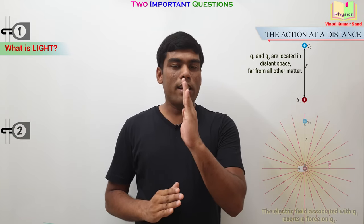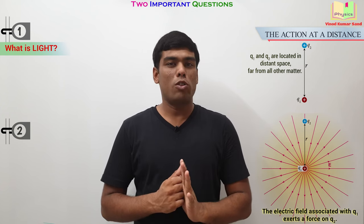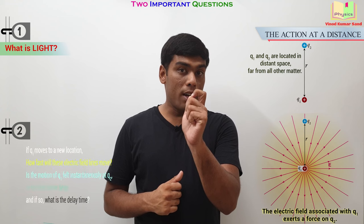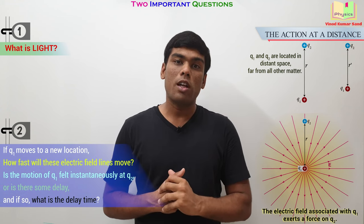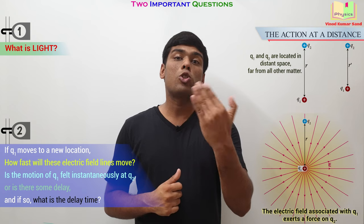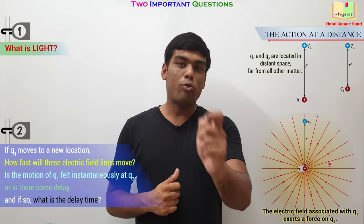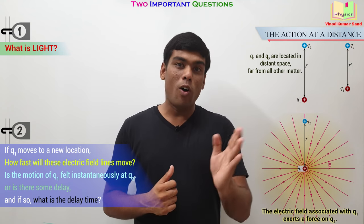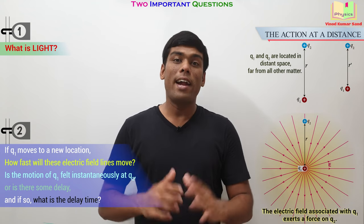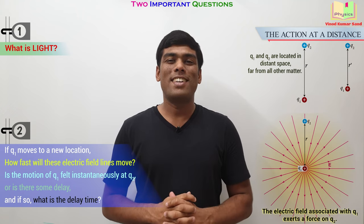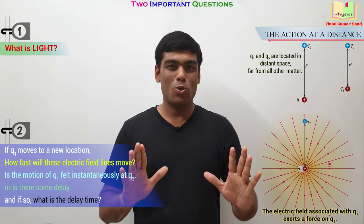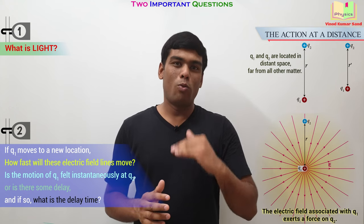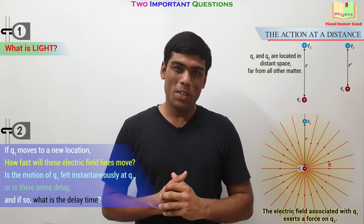Now, the electric field produced by Q1 exerts the force on Q2. You already know these things. But if Q1 is moved slightly from its position, then after how much time will Q2 feel the motion of Q1? Will it feel instantaneously or there will be a time delay? And if there is a time delay, how much is that time delay? Got these two questions? We will be trying to answer these two questions through the concepts what we build in this video.